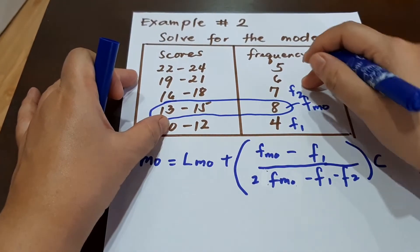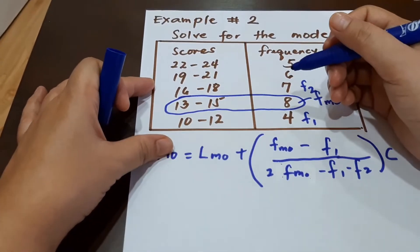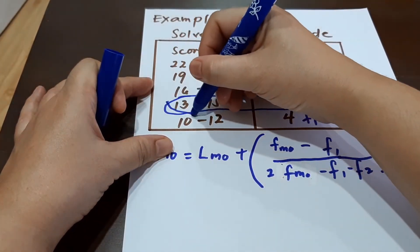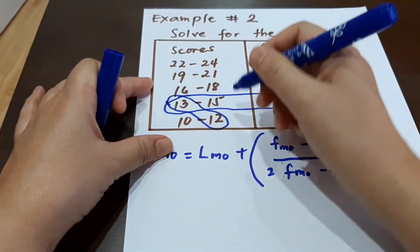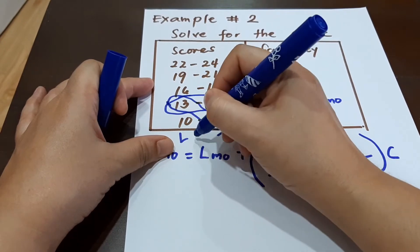So for our lower boundary, it will be here. It will be 12.5. That is our LMO.